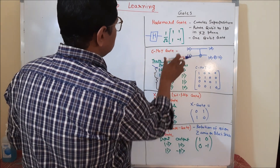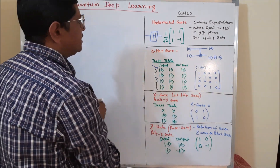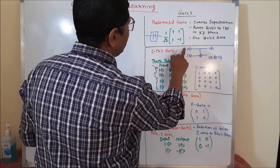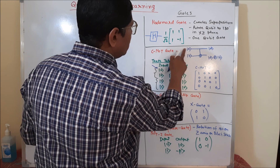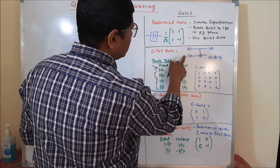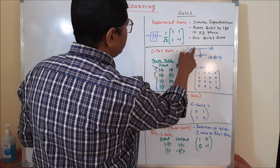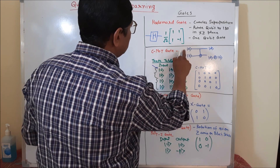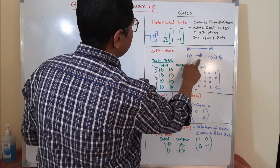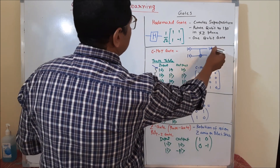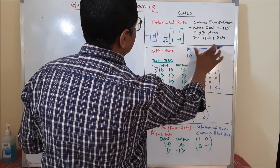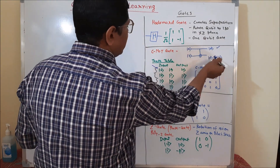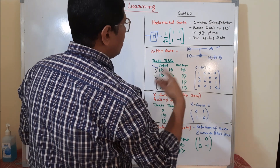The next part is the CNOT gate. When we pass qubit A and qubit B through the CNOT gate: qubit A is the control qubit and qubit B is the target qubit. When we apply the CNOT gate on the target qubit with respect to the control qubit, we get the CNOT gate output. The upper part — the control qubit — just gives the same output through.